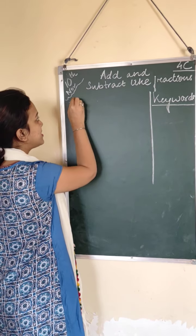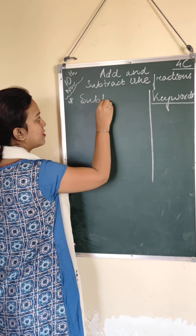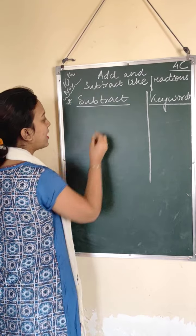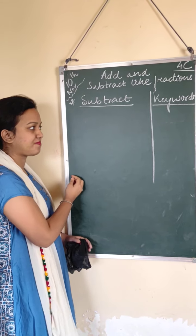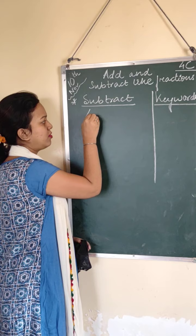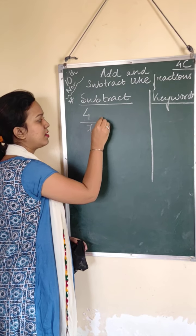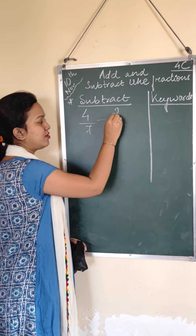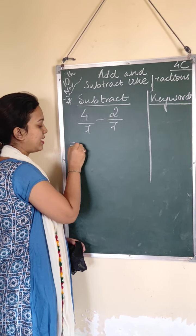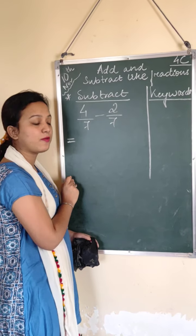But today what we will study is how to subtract. How to subtract. Suppose I take a number: 4 by 7 minus 2 by 7. Now, in this step, how will we perform?